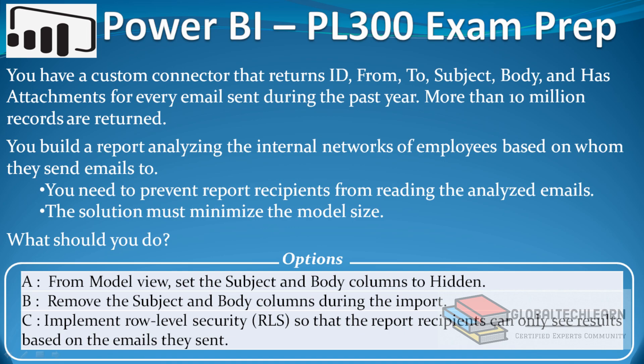Now let's look at the next option: remove the subject and body columns during the import. This option looks correct as these two fields are not required in the analysis, and if we remove these two columns it will reduce the file size. Option C is to implement row-level security so that report recipients can only see results based on the emails they sent. This option will also partially fulfill the requirement as it can prevent data access, but it will still not reduce the model size.